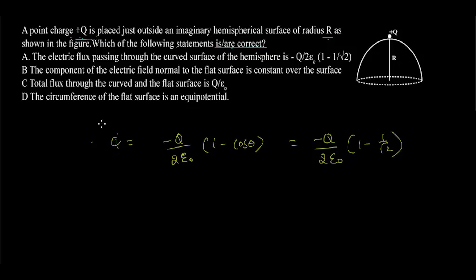Let us see about option B. The component of electric field normal to the flat surface is constant all over the surface. Let us consider a point at a distance of R and on the flat surface. Now the distance of the point from charge Q is given by R square plus R square. Electric field at this point is given by E equal to KQ by R square plus capital R square.